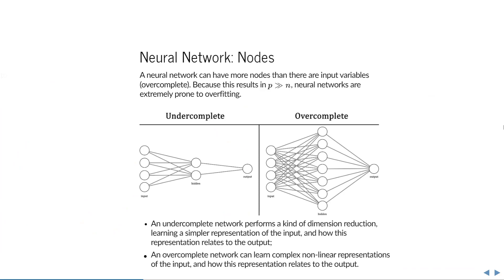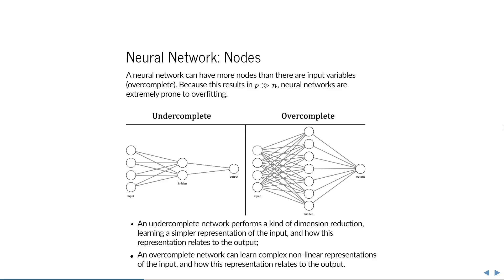Neural networks can have many nodes — usually more than there are input variables — which is called overcompleteness. That means many parameters to learn, making neural networks very prone to overfitting, so we must perform some form of regularization. There are also undercomplete networks where we reduce the number of variables to a smaller amount, similar to PCA — performing a kind of dimension reduction and learning a simpler representation. An overcomplete network can learn very complex nonlinear representations of the input and how this large representation relates to the output.